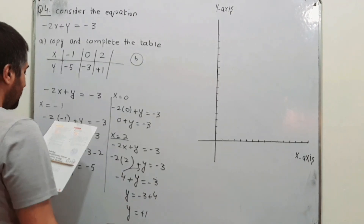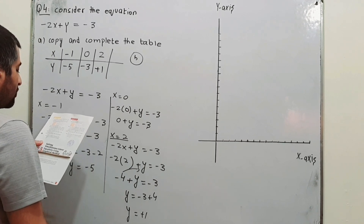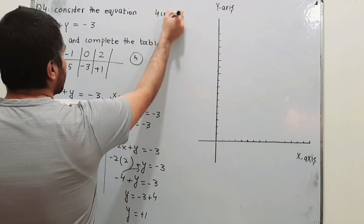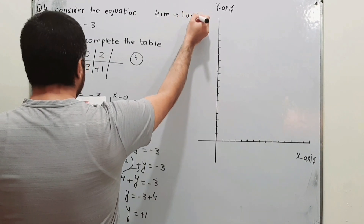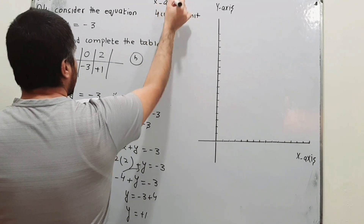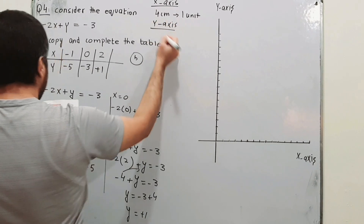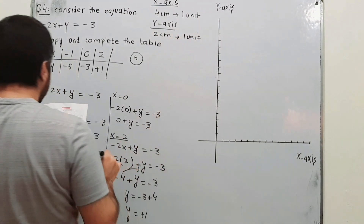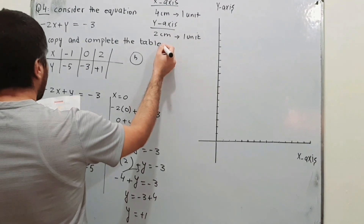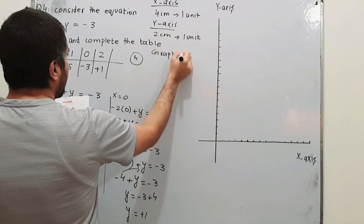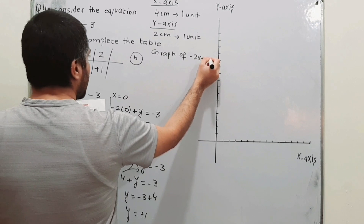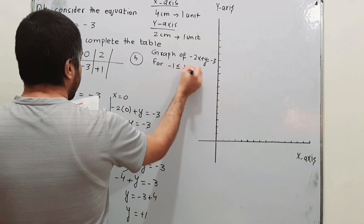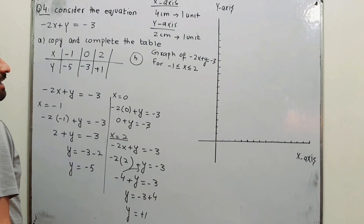Part B: On a sheet of graph paper, using a scale of 4 centimeters to represent 1 unit on the x-axis, and 2 centimeters to represent 1 unit on the y-axis, draw the graph of minus 2x plus y = minus 3 for minus 1 ≤ x ≤ 2.